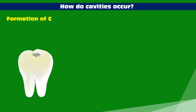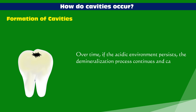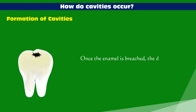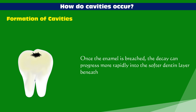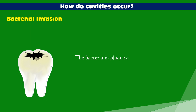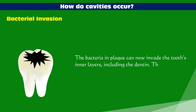Formation of cavities: over time, if the acidic environment persists, the demineralization process continues and can progress to form small holes or cavities in the enamel. Once the enamel is breached, the decay can progress more rapidly into the softer dentin layer beneath. Bacterial invasion then occurs as bacteria in plaque invade the tooth's inner layers, including the dentin, causing the cavity to grow larger and deeper.